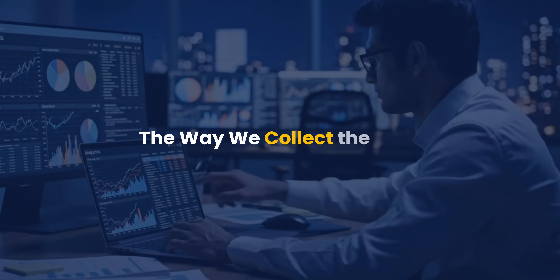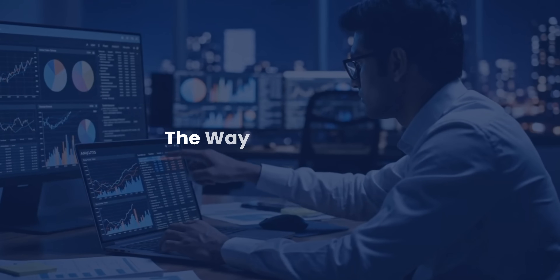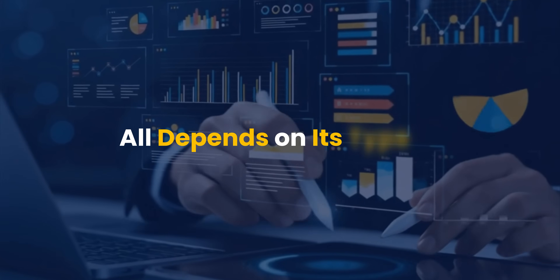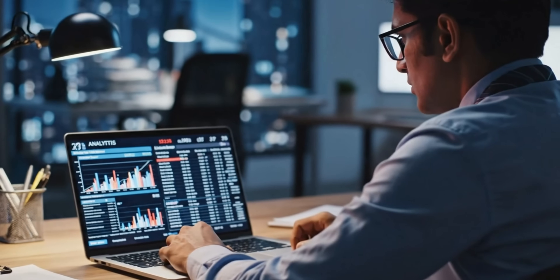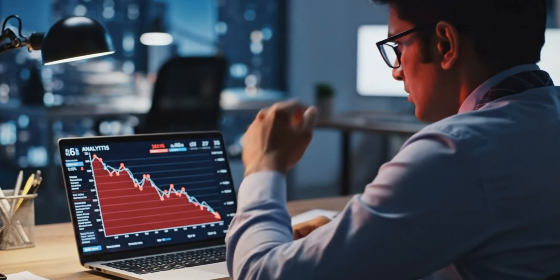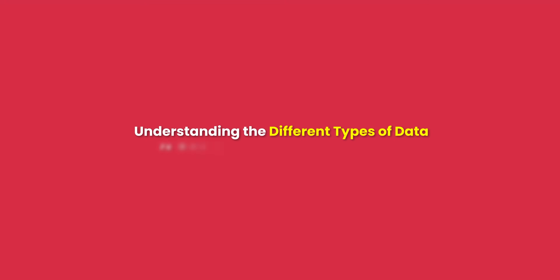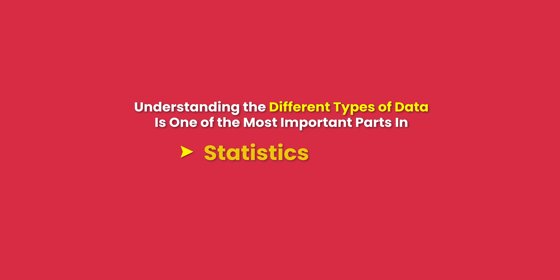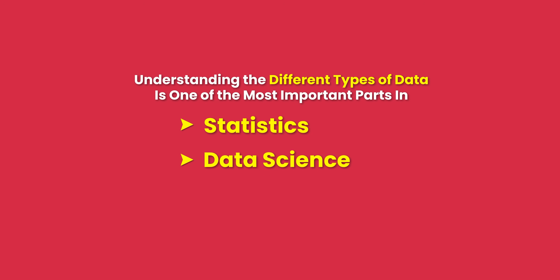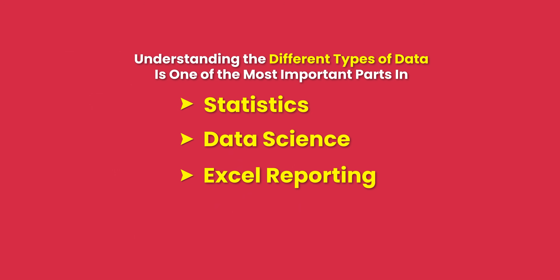But not all data is the same. The way we collect the data, the way we organize it, and the way we interpret it all depends on its type. And if the type is misunderstood, the entire analysis can head in the wrong direction. That's why understanding the different types of data is one of the most important parts in statistics, data science, and even in something as simple as Excel reporting.